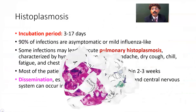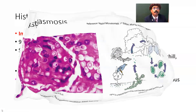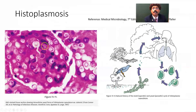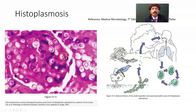Looking at the histopathology, we can see the conidia and intracellular yeast of Histoplasma capsulatum. Here is the lesion inside the phagocytic cell — this is the histoplasmosis.